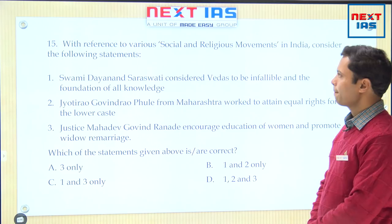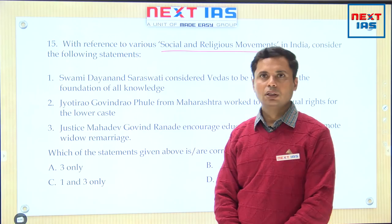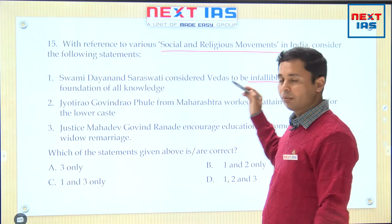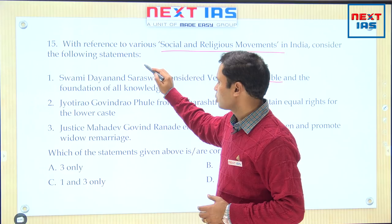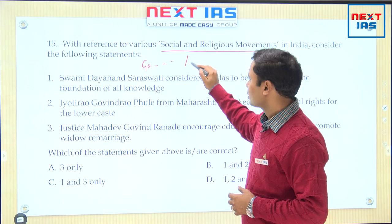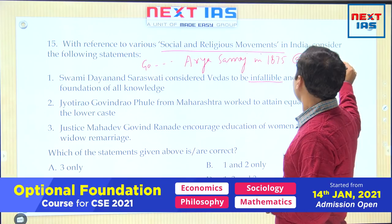Moving to question number 15: with reference to social and religious movements in India, consider the following statements. Swami Dayananda Saraswati considered Vedas to be infallible and the foundation of all knowledge — that is true. Infallible means the Vedas do not have any mistake; they are sacrosanct. Dayananda Saraswati also highlighted the slogan 'Go Back to Vedas' and established the Arya Samaj in 1875 at Bombay.